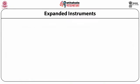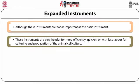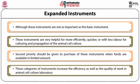Expanded instruments, although not as critical as basic instruments, are equally important and very helpful for more efficiency and quicker results. They reduce labor in culturing and propagation of animal cell culture. Second priority should be given to purchasing these instruments when funds are limited. These instruments increase efficiency, work quality, and also provide more safety to the manpower working in your laboratory.